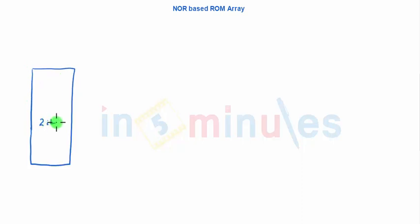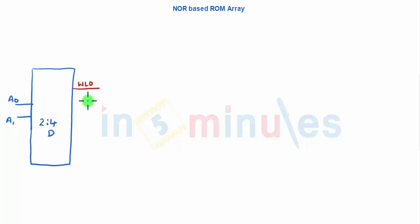So with all that basics we are all set to start. This is my decoder — for the time being I will assume a 2-to-4 decoder, which will have two address lines, say A0 and A1, and will have four outputs. We'll call them word line 0, word line 1, word line 2, and the last one word line 3.